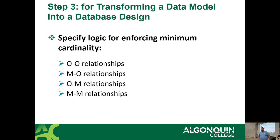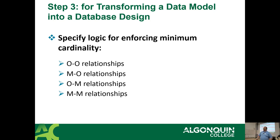You can specify the logic for enforcing minimum cardinality: one-to-one, many-to-one, one-to-many. By the way, many-to-one and one-to-many is the exact same thing — it just depends which side of the equation you're looking at. For example: one teacher to many students — that's a one-to-many from my perspective, but from the students' perspective it's many-to-one. Same thing. Many-to-many is the last type.